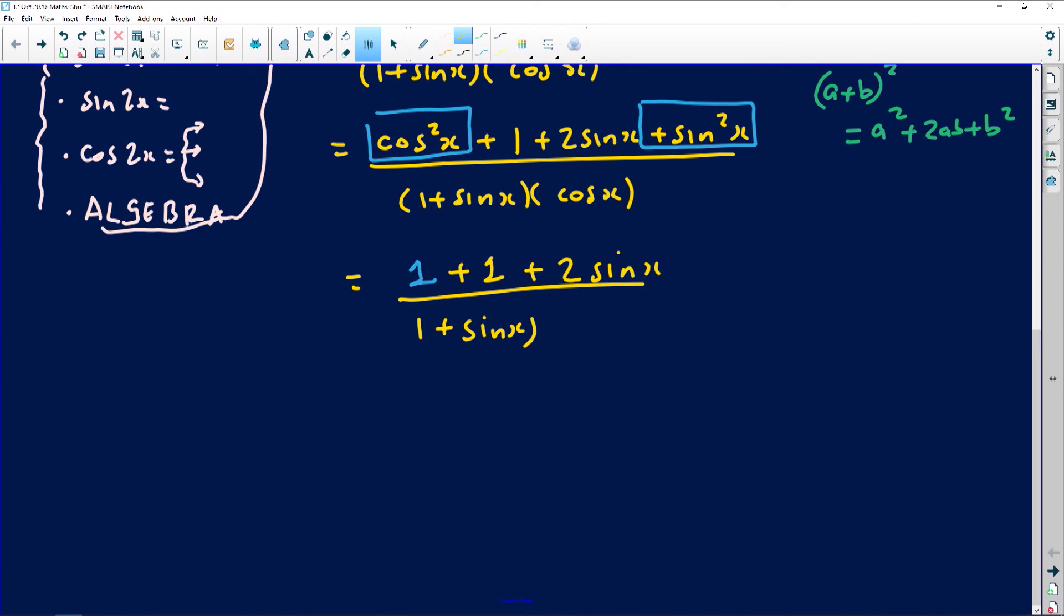I hope this is actually making a lot of sense to you guys because it looks very simple to me. The sum of one and one is two, you don't need a calculator for that. Then you're going to have 2 sine x divided by 1 plus sine of x times the cosine of x.